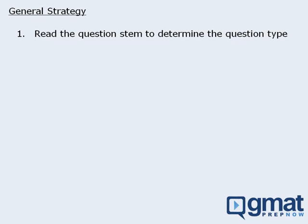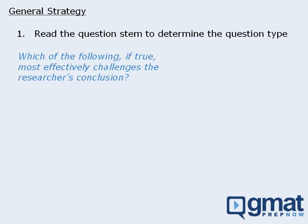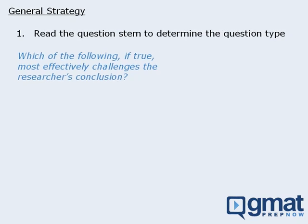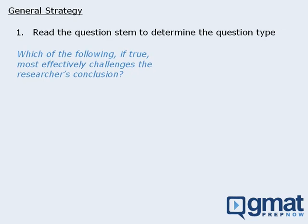For example, in upcoming lessons we'll learn that if a question stem says something like, 'which of the following, if true, most effectively challenges the research's conclusion,' then we'll recognize that this must be a weaken the argument type question. Once we know this, we can apply the strategy for weaken the argument questions as we read the argument in the passage.